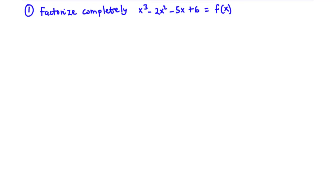So we are going to solve our first question: factorize completely x cubed minus 2x squared minus 5x plus 6. To solve this, we are going to find the possible values of x that will make the polynomial function go to 0, by substituting values of x.